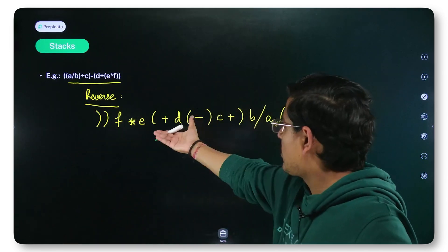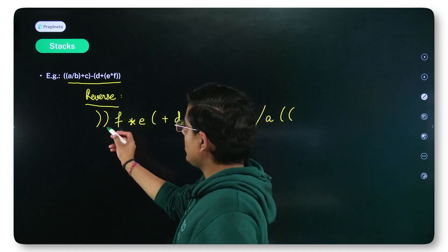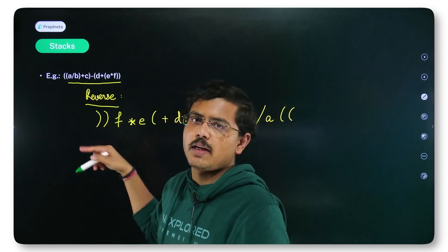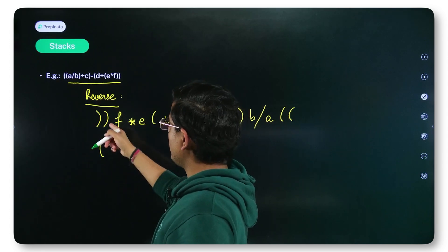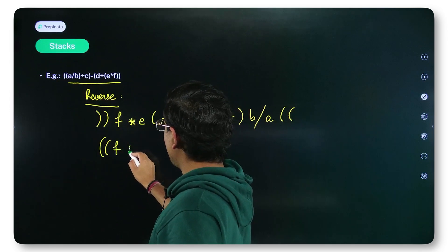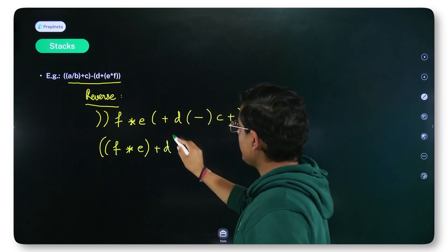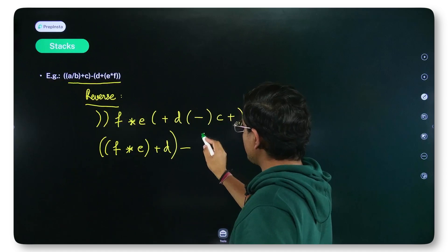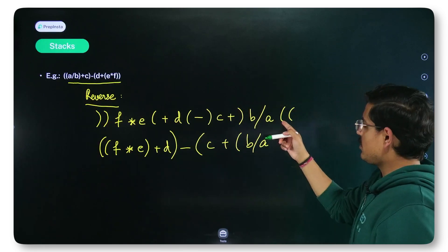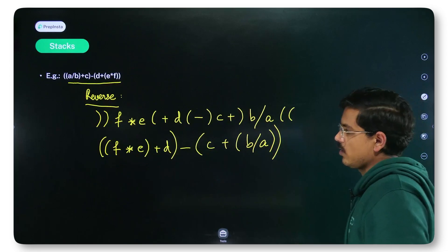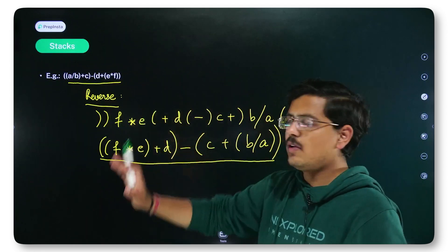Remember the second step: interchange the parentheses, because the parentheses after reversal make no sense as-is. So if it is a closing parenthesis, make it opening; if it is opening, make it closing. So: closing becomes opening, closing becomes opening, F, star, E, opening becomes closing, plus, D, opening becomes closing, minus, closing becomes opening, C, plus, closing becomes opening, B, divided by, A, opening becomes closing, opening becomes closing. This is the infix expression obtained after reversal and interchanging of parentheses.